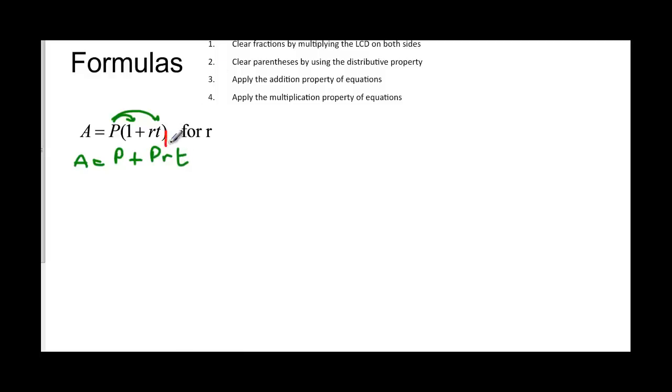I want to solve for this r. So I've got to make sure that I get this r on one side by itself. I only have one r, it's on one side, so I'm ready to start doing the addition property. The addition property tells me that I want to take this P and take it to the other side. I've got to peel that layer of my onion. So we subtract P from both sides.